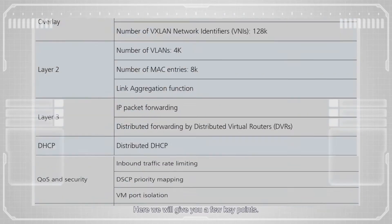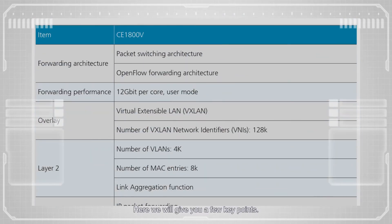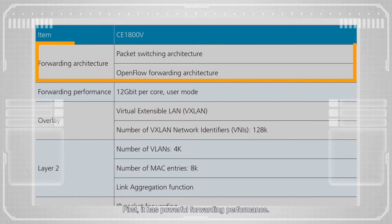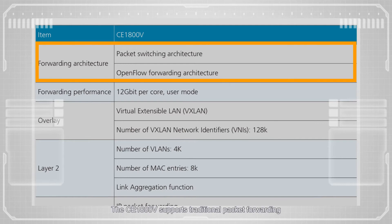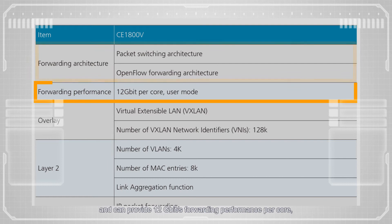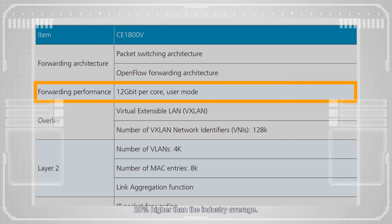The CE1800v has powerful functions, which can be indicated in light of its specifications. Here, we will give you a few key points. First, it has powerful forwarding performance. The CE1800v supports traditional packet forwarding and OpenFlow flow table based traffic forwarding architectures, and can provide 12 gigabit per second forwarding performance per core, 20% higher than the industry average.